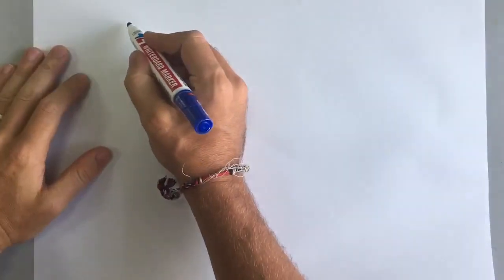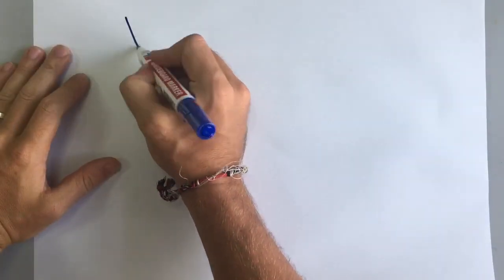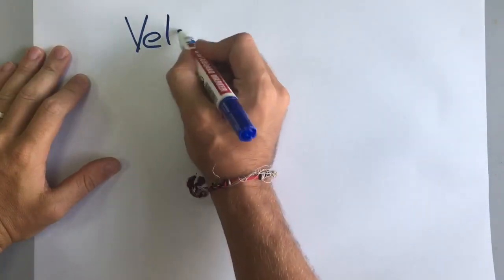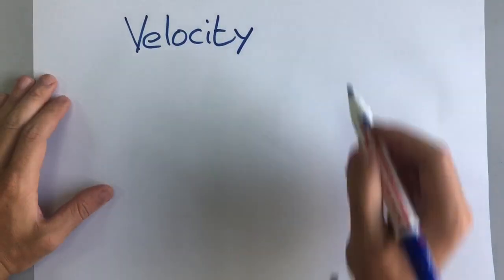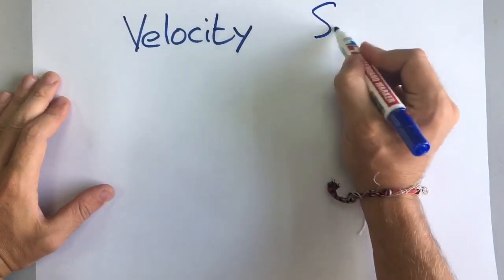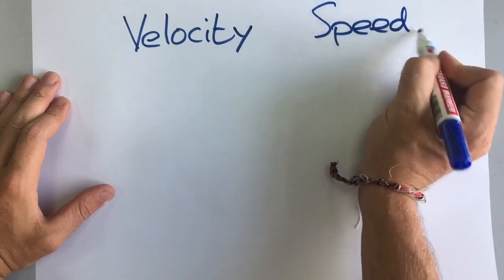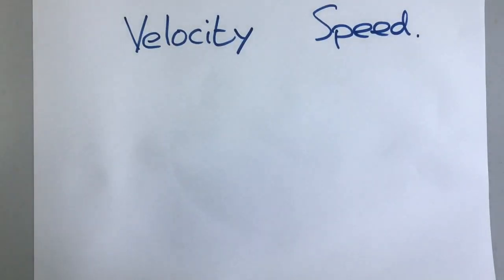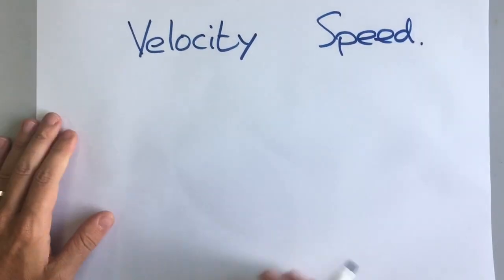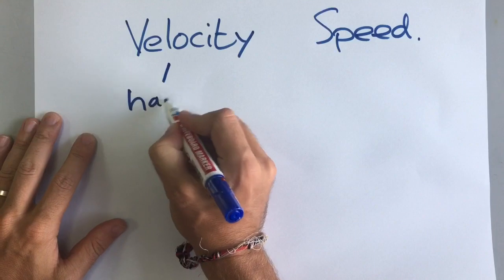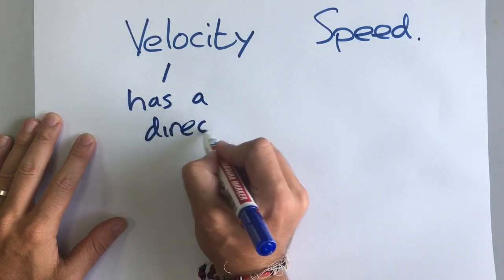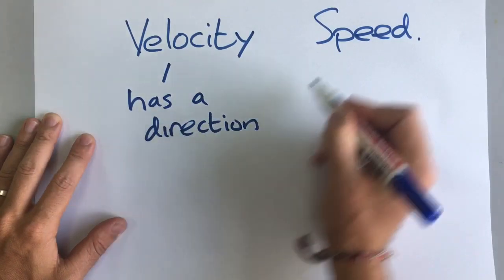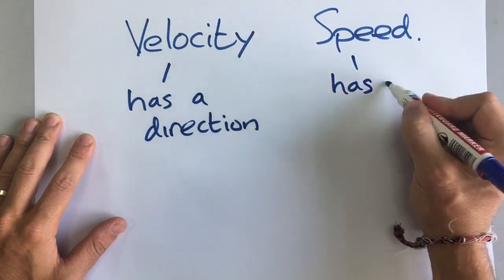There's another word that we sometimes use, and that word is velocity. Velocity and speed are very similar but there's one important difference: velocity has a direction and speed has no direction.